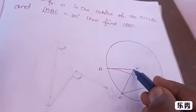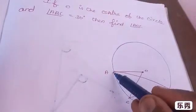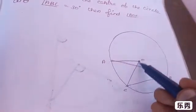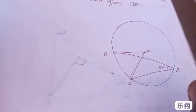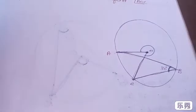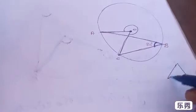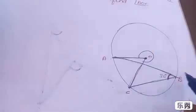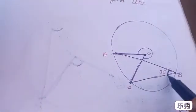So O is the center of the circle. Angle ABC — this is the center point, and the radius connects to center point O. The center angle is double the arc angle, so we use the theorem that the central angle is twice the inscribed angle.